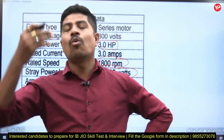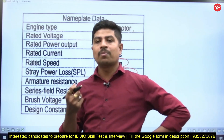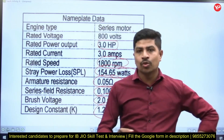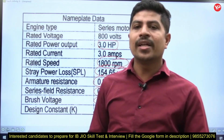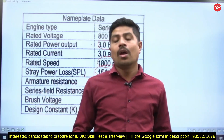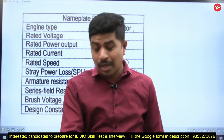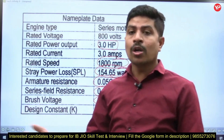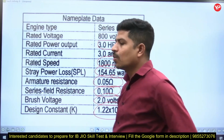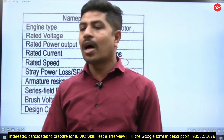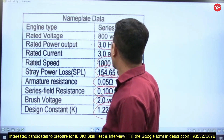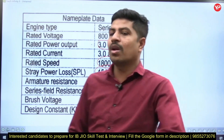Important nameplate parameters are voltage, current, power, and speed. They may ask you — given a required power for a motor — which motor to select from those demonstrated. If you want power, calculate voltage times current for input power. Convert the HP rating into watts, and you get the rated power of that motor.